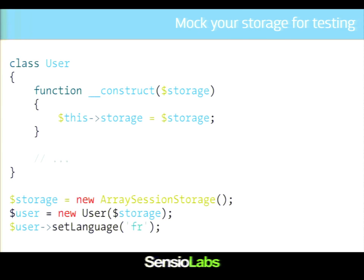If you want to test the user class and you don't want to use a session — because when you are running PHPUnit on the command line, you don't have any session — I need a specific implementation that, for instance, uses arrays instead of using PHP sessions. That's also useful if the default implementation you are using is slow. If my session storage class actually makes an HTTP call to another service, in your unit test you don't want to make HTTP calls, so you can just use this simple array-based implementation that is really fast for your unit tests.